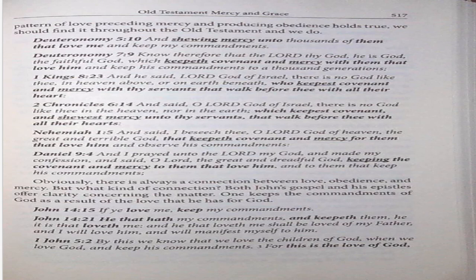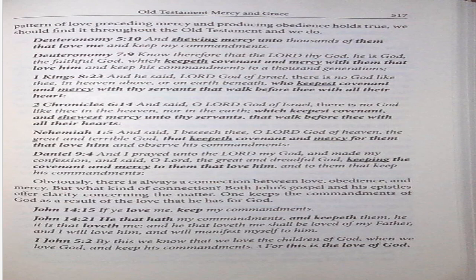Deuteronomy 5:10, and showing mercy unto thousands of them that love me and keep my commandments. Deuteronomy 7:9, know therefore that the Lord thy God, he is God, the faithful God, which keepeth covenant and mercy with them that love him and keep his commandments to a thousand generations. 1 Kings 8:23, Lord God of Israel, there is no God like thee in heaven above or on earth beneath, who keepeth covenant and mercy with thy servants that walk before thee with all their heart. 2 Chronicles 6:14, O Lord God of Israel, there is no God like thee in the heaven nor in the earth, which keepeth covenant and showeth mercy unto thy servants that walk before thee with all their hearts. Nehemiah 1:5, the great and terrible God that keepeth covenant and mercy for them that love him and observe his commandments. Daniel 9:4, O Lord, the great and dreadful God, keeping the covenant and mercy to them that love him and to them that keep his commandments.